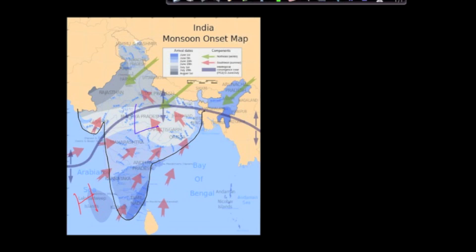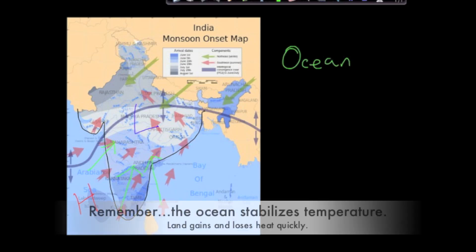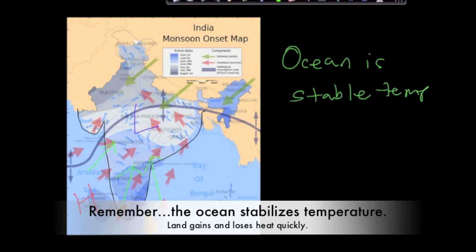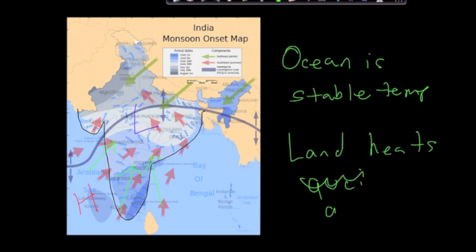When there's an area of high pressure and an area of low pressure, the high pressure area rushes to fill the low pressure area — just like when you pop a tire, the air rushes out to the low pressure surroundings. The same thing is happening in India in the summer. The low pressure area forms over land because it heats up much more quickly than the ocean. The ocean is stable in temperature, and the land heats up quickly, and that creates the low pressure area. So wind flows high to low, carrying precipitation and moisture, resulting in a ton of rain in the summer.